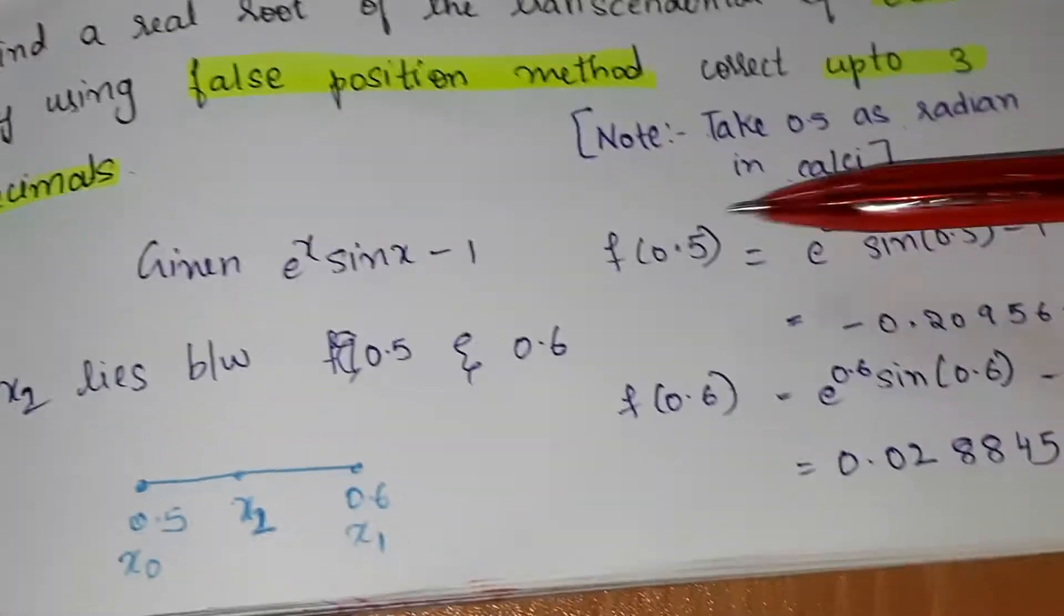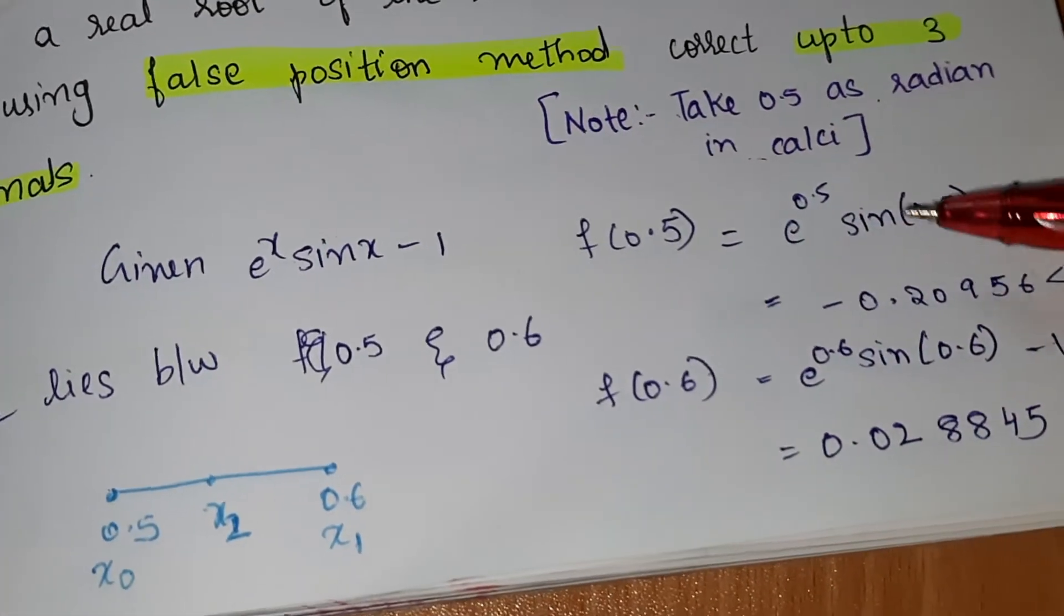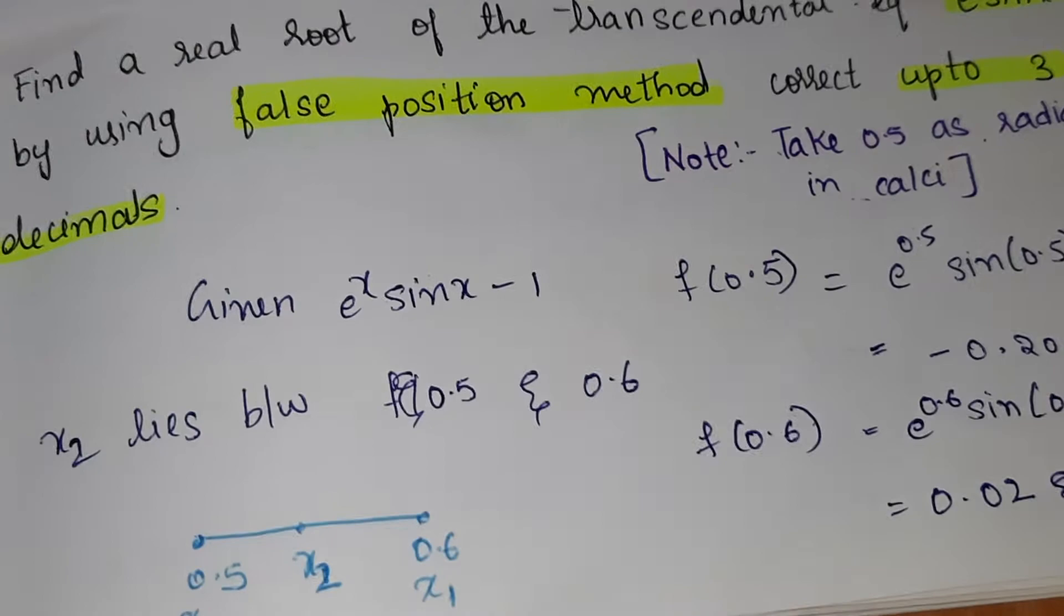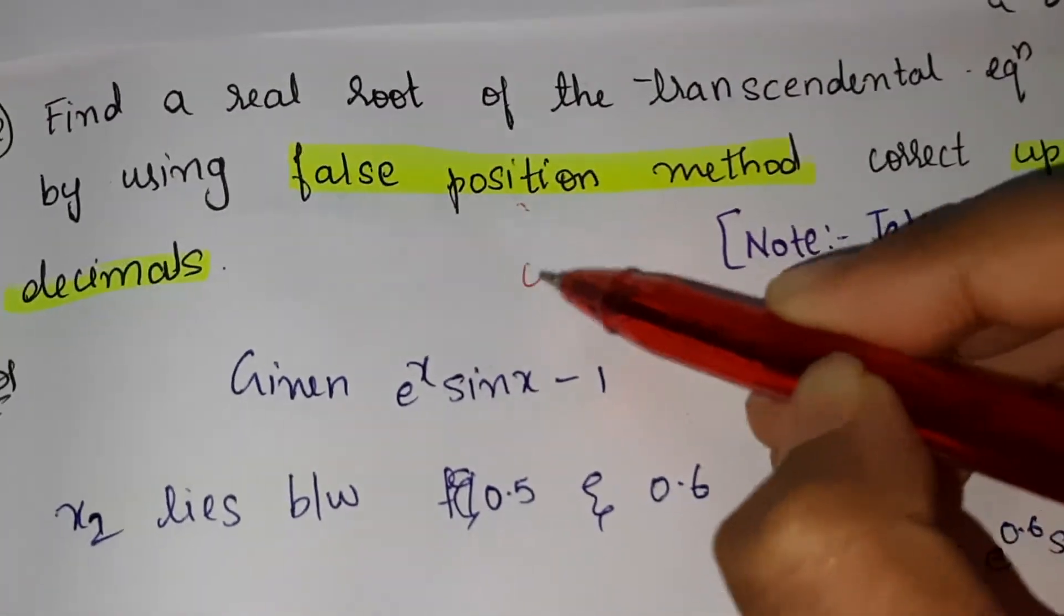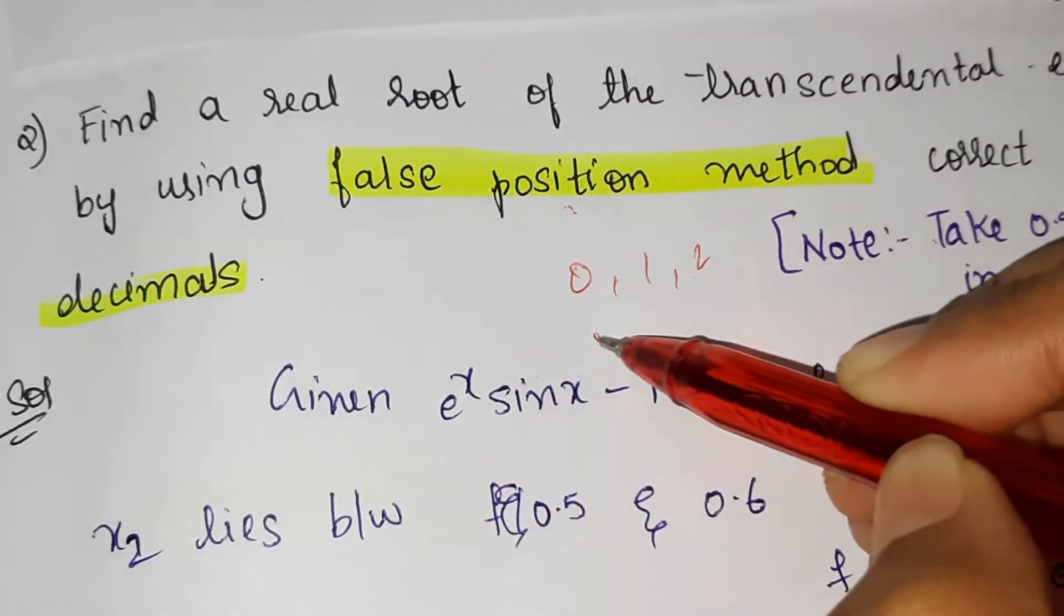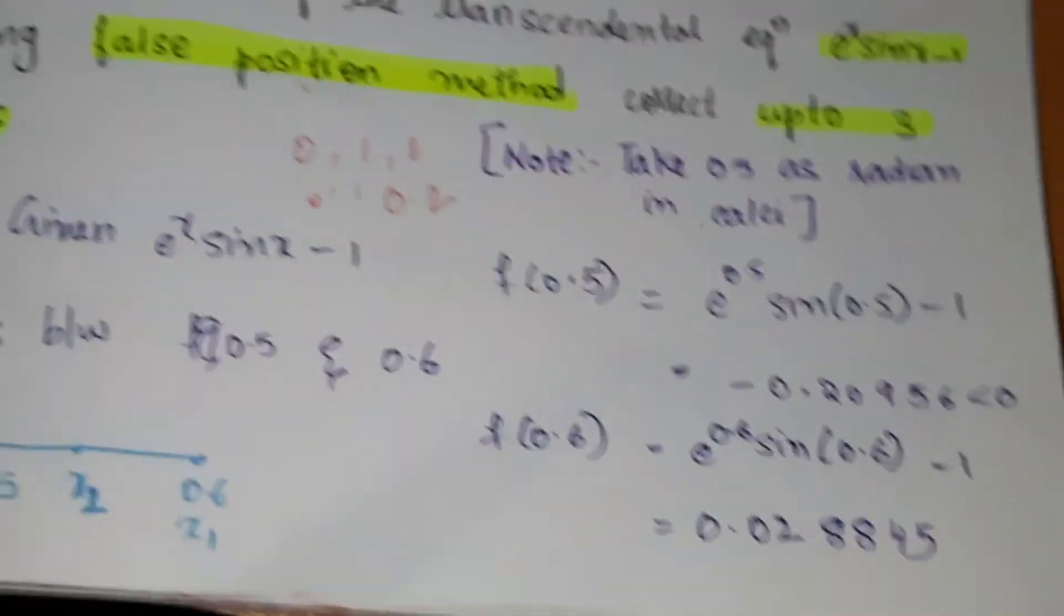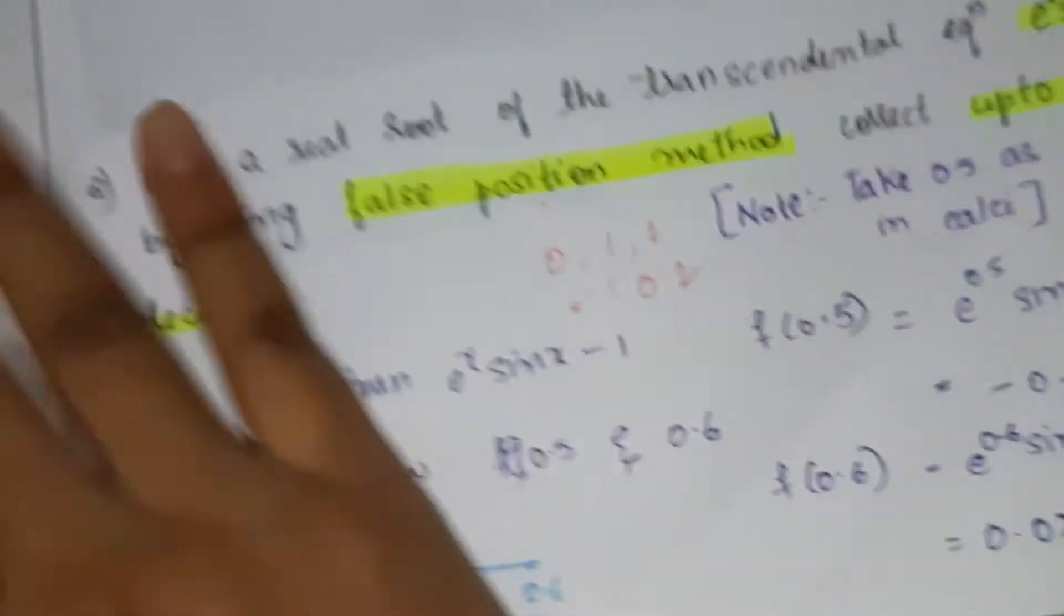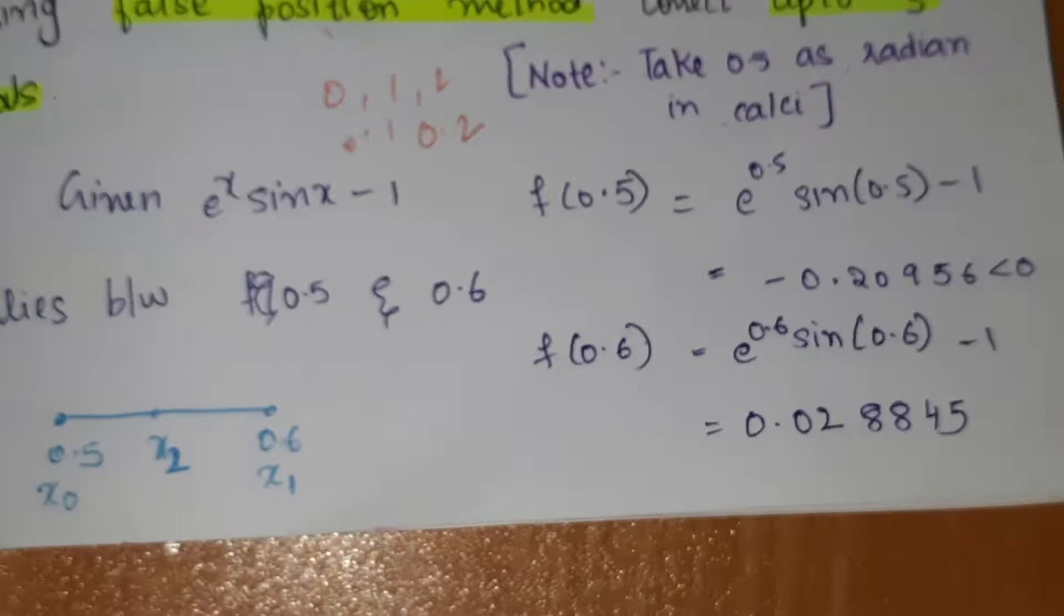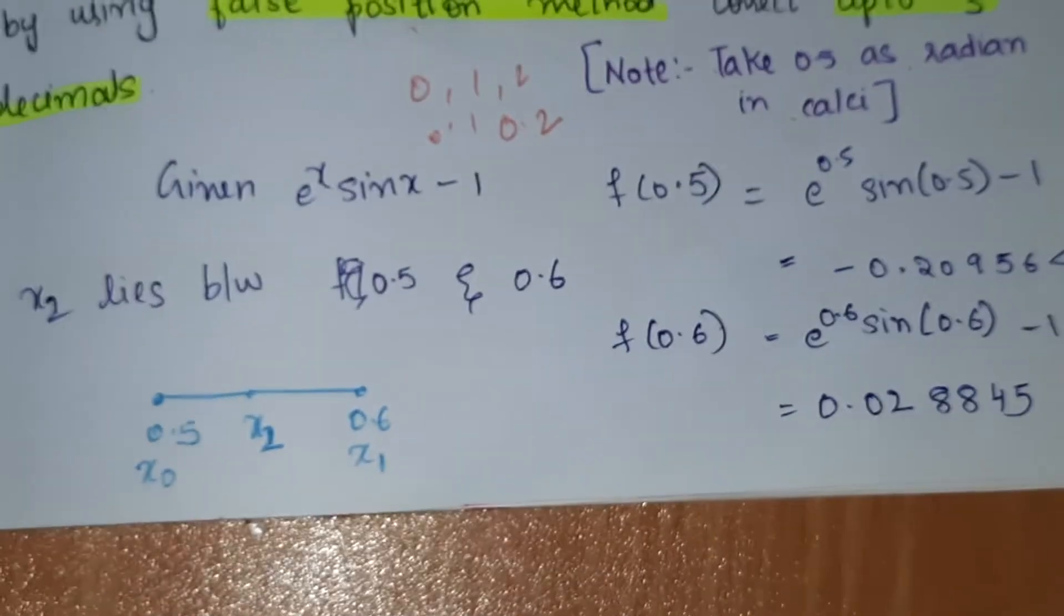The x0 and x1 values are these. You should try for 0, try for 1, 2, then 0.1, 0.2, try all the values. After that we'll conclude that the root lies between 0.5 and 0.6. You try all values, then only you'll understand.